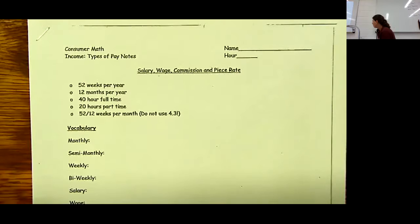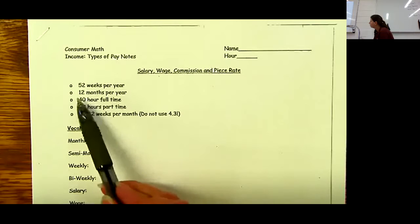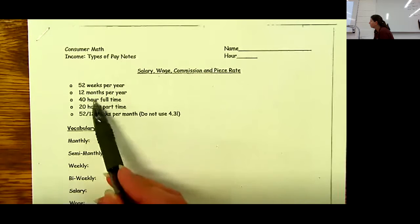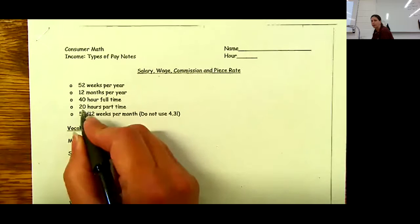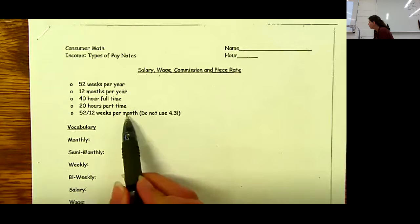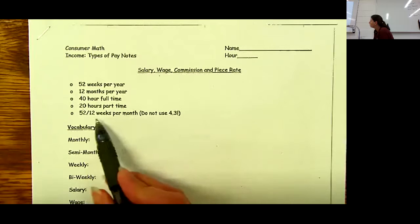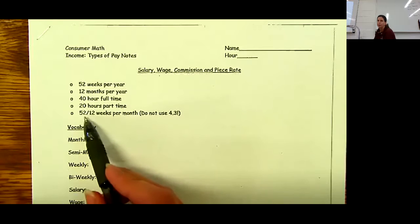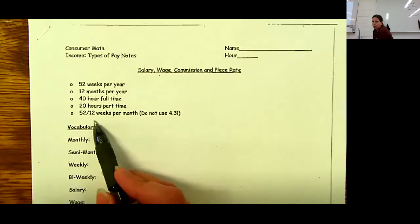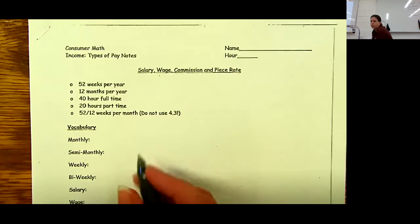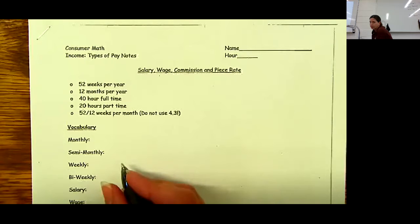One of them is the fact that you need to know that there's 52 weeks in a year, 12 months per year. In this class, we're going to consider 40 hours full-time. If they talk about part-time jobs, we're going to consider that anything 20 or less, and then 52/12 weeks per month. I'd prefer you not to use the decimal because that rounds some things. Most of the time when you're in elementary school, people ask you how many weeks are in a month, and they'll say four.